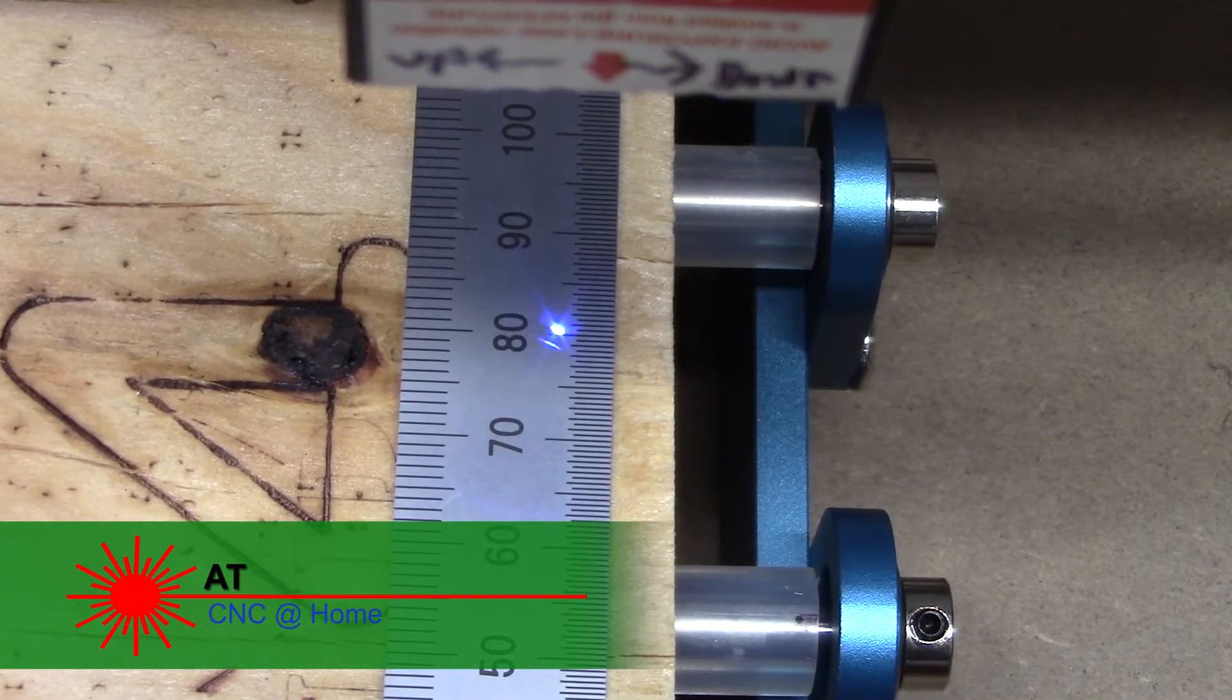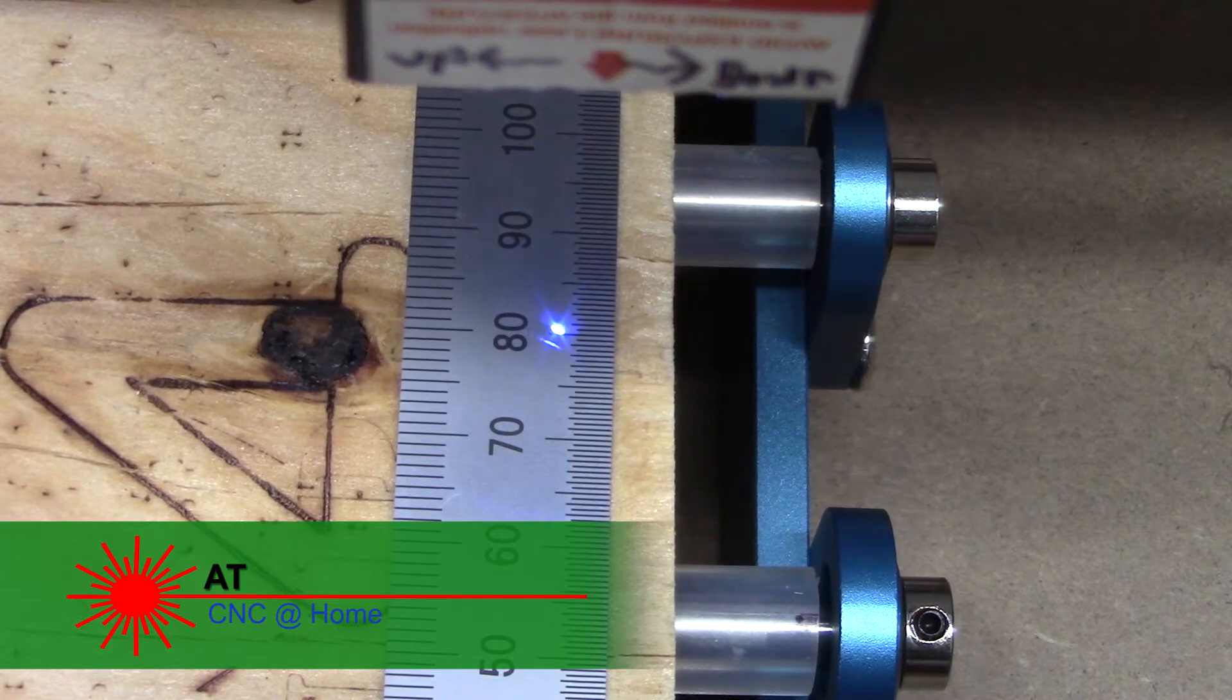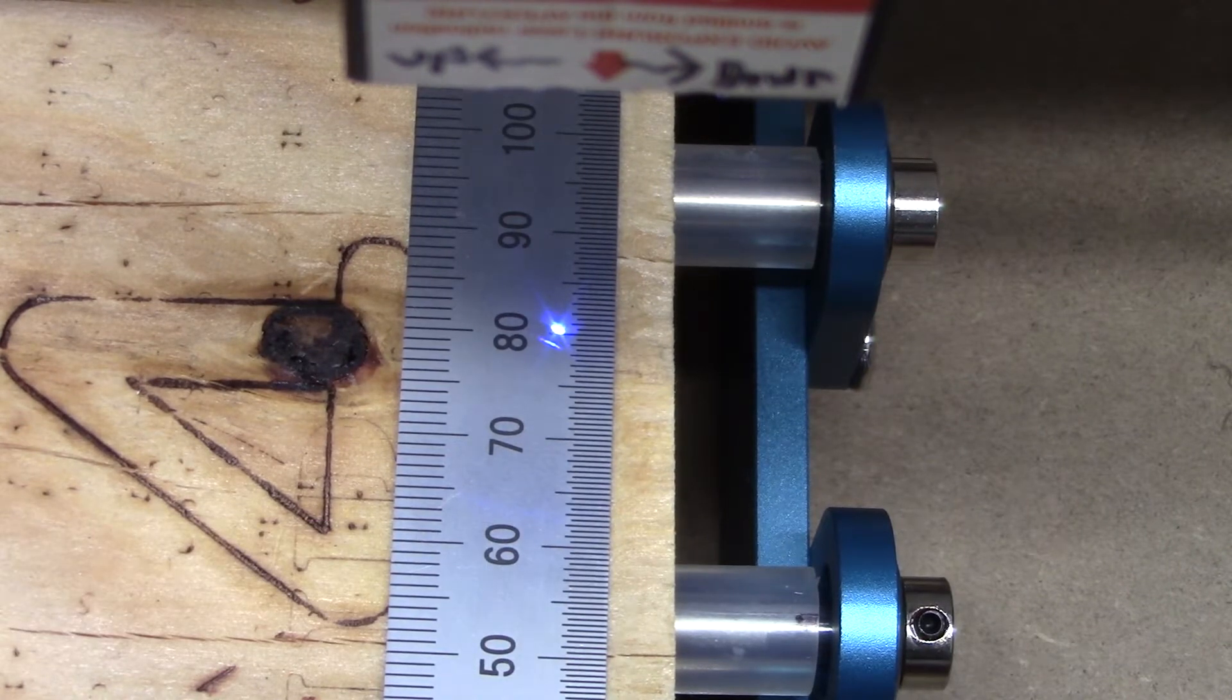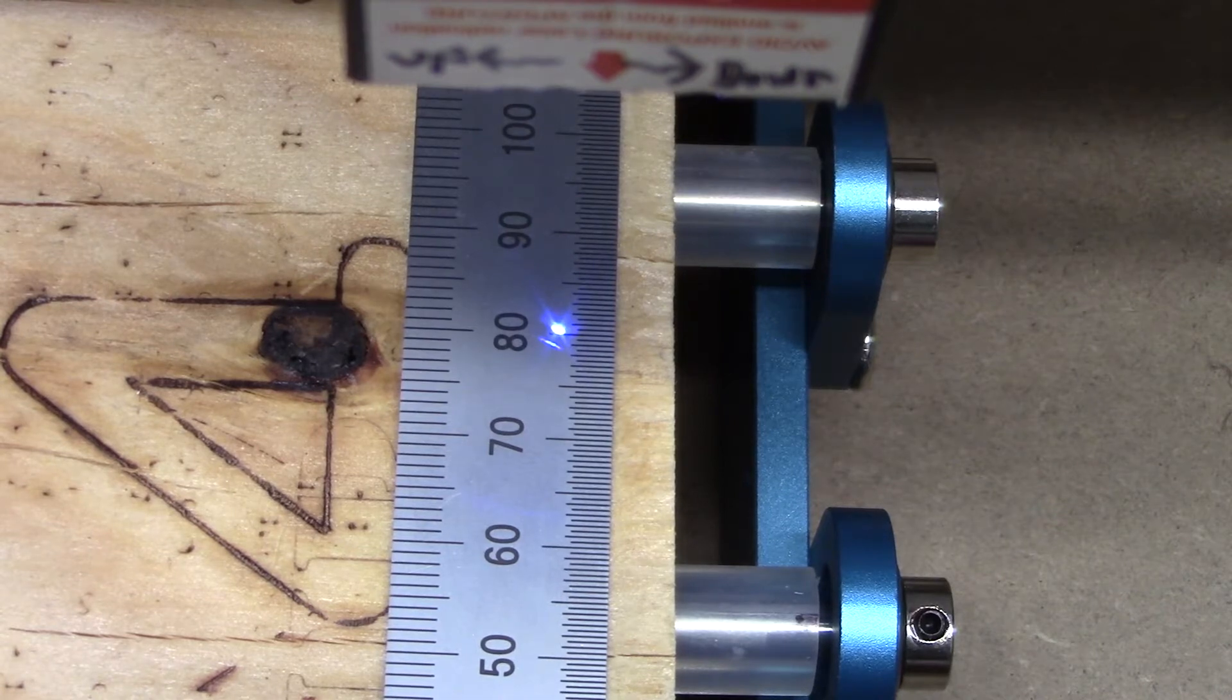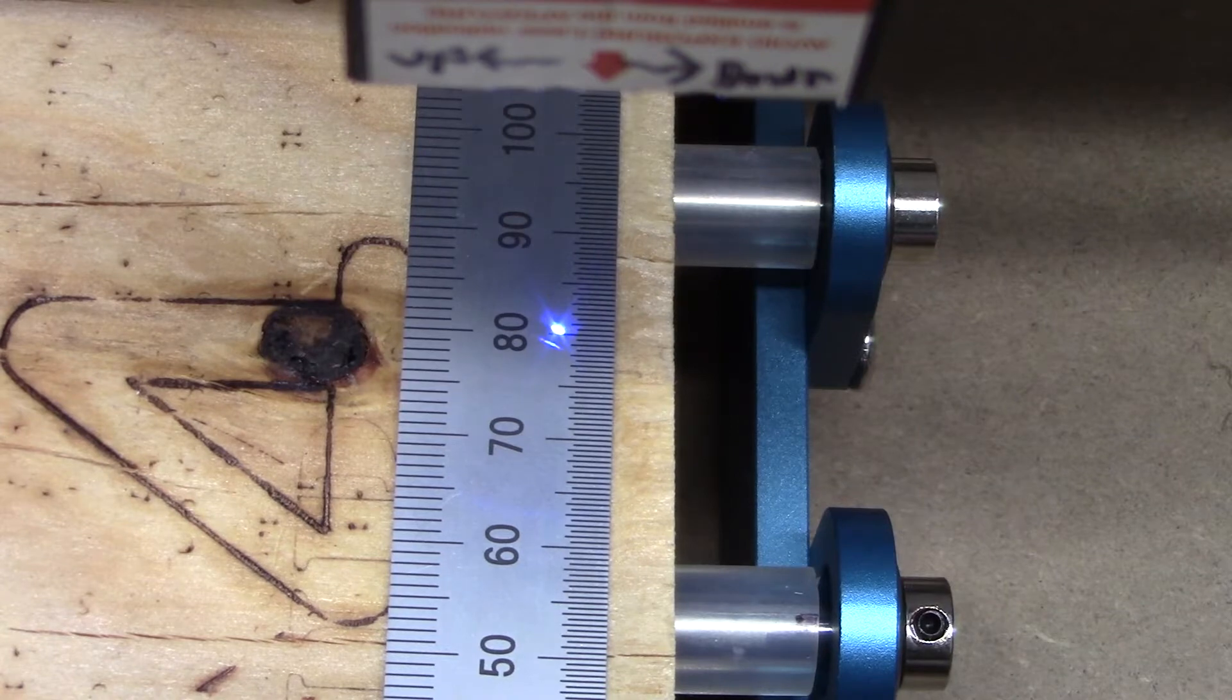Hi, AT from CNC at home. If you remember when we set up the rotary roller, we noticed that the movement back and forth seemed to be off somehow. I'd move 10 or 20 millimeters one direction, and I'd move back, and it wouldn't be in the same spot.